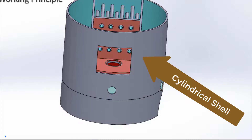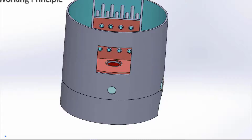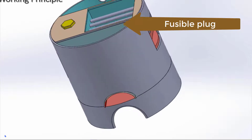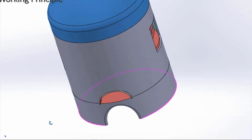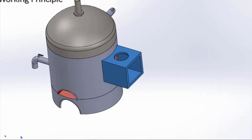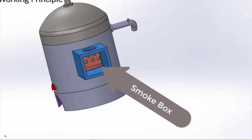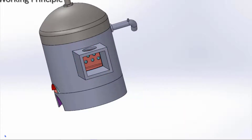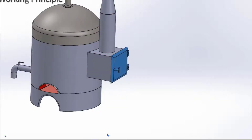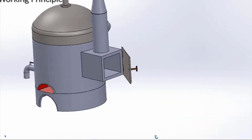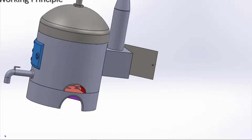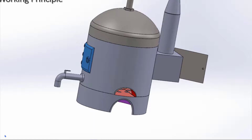The hot gases pass through the fire tubes to the smoke box. Look at the fusible plug above the combustion chamber. The upper part of the cylindrical cell is mostly occupied by steam. The smoke box discharges smoke to the atmosphere with the help of a chimney, and it is provided with a door for inspection and other purposes. There is another inspection door at the combustion chamber end.